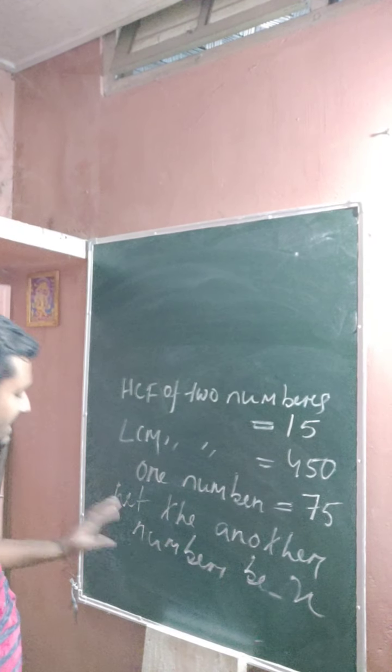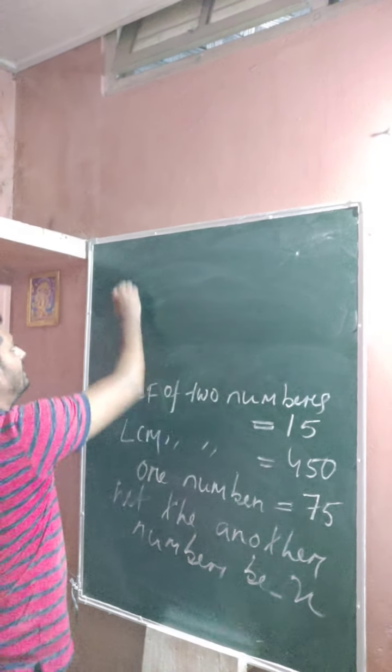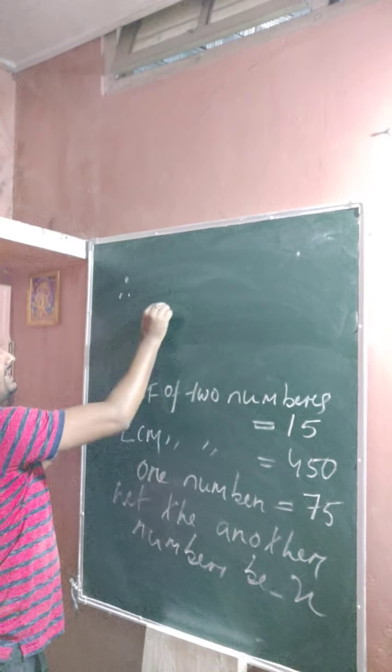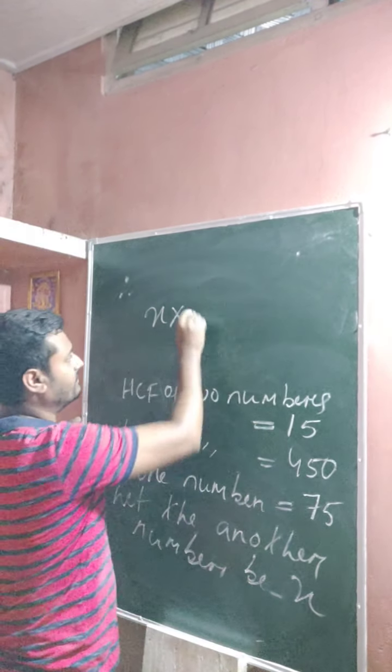In class 6, directly you can solve. You don't need to write the formula. So, therefore, product of two numbers means one is X, X into one number is 75.